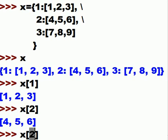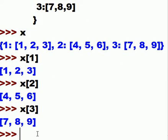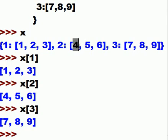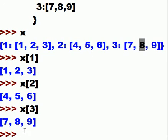Let's do x with key two — I get four, five, six. And x with key three — I get seven, eight, nine. Now I want to access specific elements within those lists.